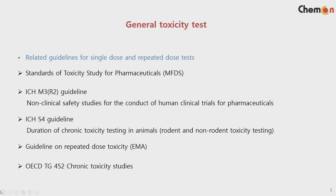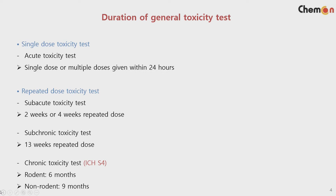For general toxicity tests, we need to design and implement the test and follow the guidelines during that process. For pharmaceuticals, there are different guidelines such as MFDS standards for toxicity study, ICH M3, EMA guideline, and OECD. Details like how many animals are needed per group are specified in MFDS and OECD, whereas EMA and ICH guidelines do not provide such in-depth details. For example, for chronic toxicity testing, the ICH guideline does not provide those details, so you need to refer to OECD TG452.